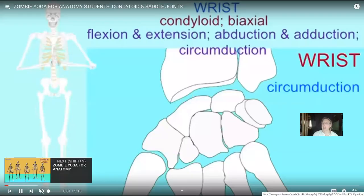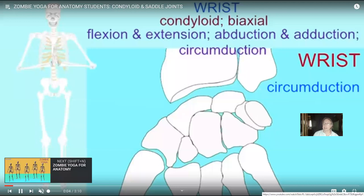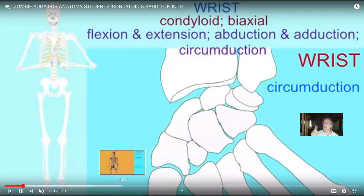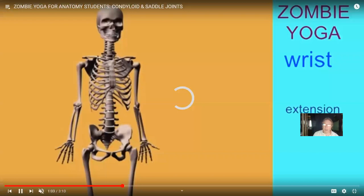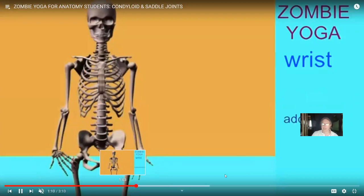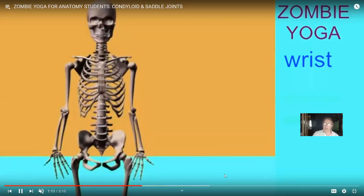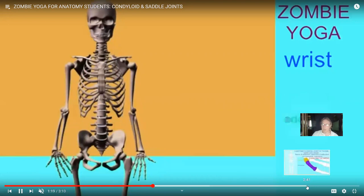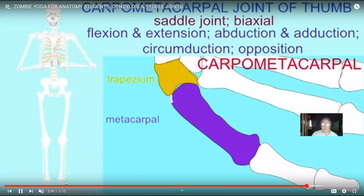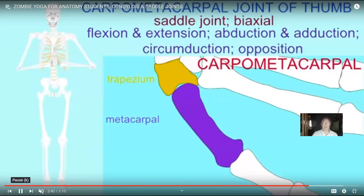There are also biaxial joints which allow movements in two planes, such as the condyloid joints of the wrist or between the metacarpal bones and the proximal phalanges. Here at the wrist, this allows flexion, extension, abduction, adduction, and then putting all of these together, circumduction — which is different from rotation. The saddle joint between the trapezium and the metacarpal of the thumb is a modified condyloid joint which allows even more movement, including opposition of the digits.